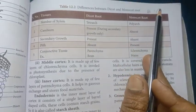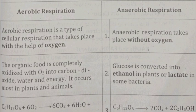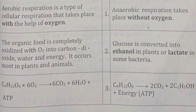Question B: Differentiate aerobic and anaerobic respiration. Aerobic respiration takes place with the help of oxygen; anaerobic respiration takes place without oxygen. In aerobic respiration, organic food is completely oxidized into CO₂, water, and energy. In anaerobic respiration, glucose is converted into ethanol in plants or lactate in some bacteria. Equation for aerobic: C₆H₁₂O₆ + 6O₂ → 6CO₂ + 6H₂O + ATP. Anaerobic: C₆H₁₂O₆ → 2CO₂ + 2C₂H₅OH + ATP.